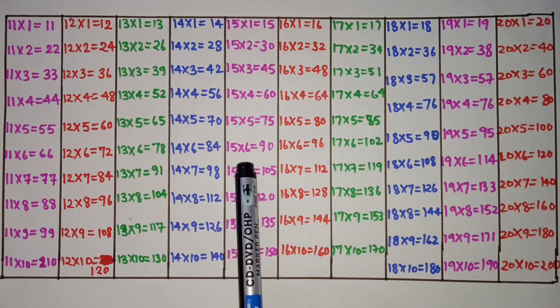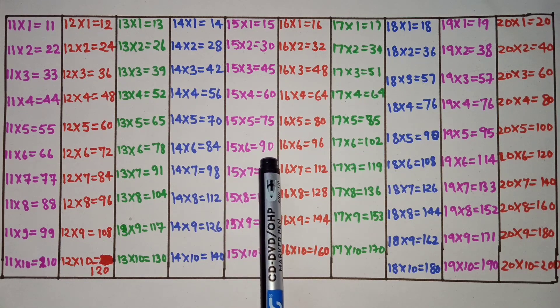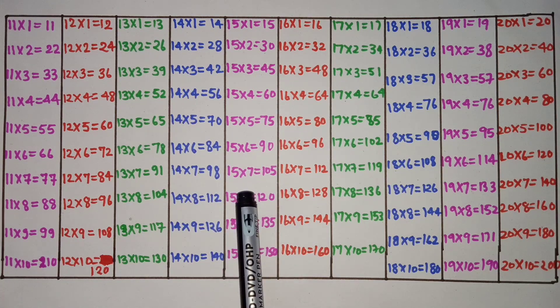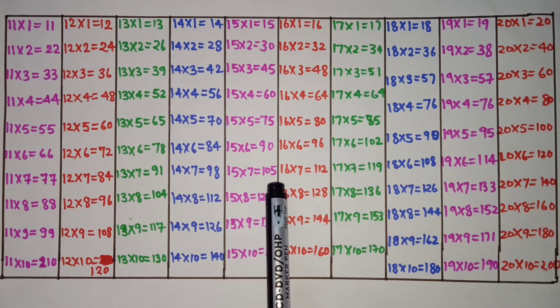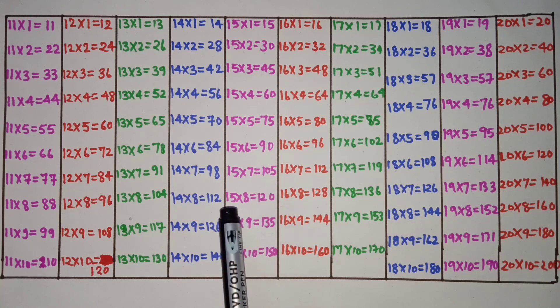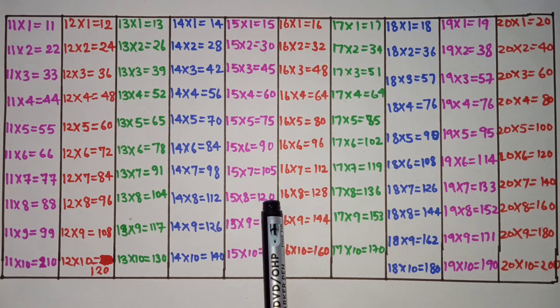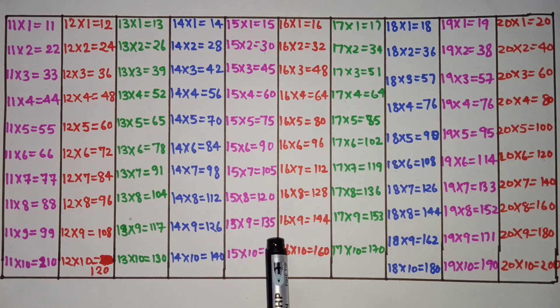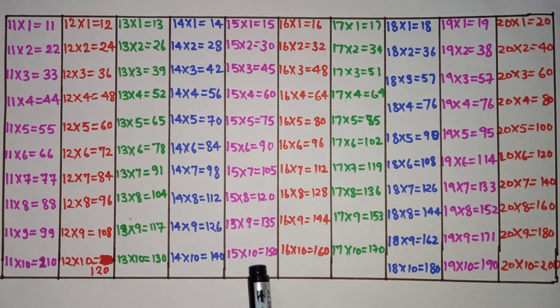15 6s are 90, 15 7s are 105, 15 8s are 120, 15 9s are 135, 15 10s are 150.